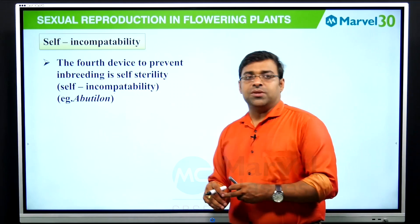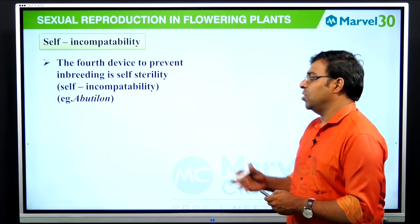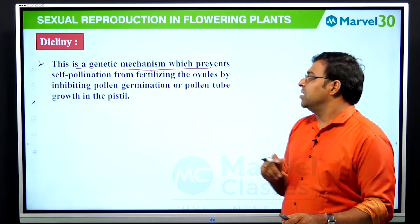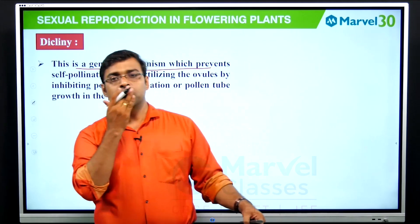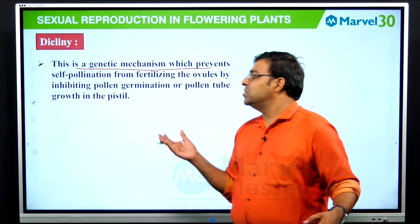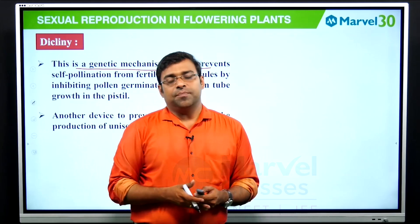The fourth device is self-incompatibility, also called self-sterility. Example: Abutilon. This is a genetic mechanism which prevents self-pollination from fertilizing the ovules by inhibiting pollen germination or pollen tube growth in the pistil.